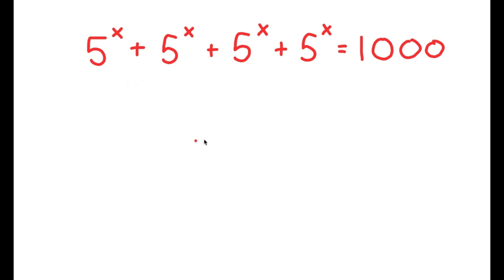So in this problem, I have 5 to the power of x plus 5 to the power of x plus 5 to the power of x plus 5 to the power of x is equal to 1000.